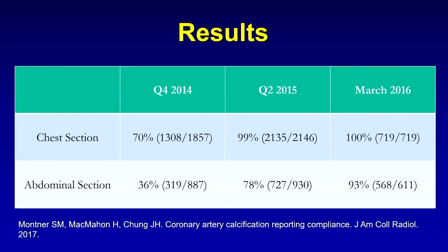Prior to the new template creation, compliance with coronary artery calcium reporting was 70% in the chest section and only 36% in the abdominal section. Following the new template, the chest section was 99% compliant while the abdominal imaging section was 78% compliant. Both sections had markedly improved, but there was room for improvement in the abdominal section.